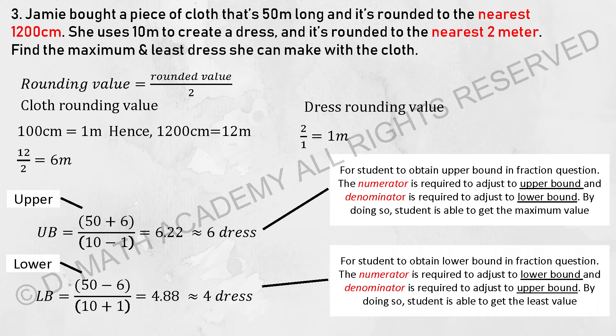Looking at the next part, both will have their own rounding values. The first one is converted to the nearest 1,200 cm and for the dress, it's nearest 2 meters. So let's say we run the calculation. We converted the 1,200 cm into meters and the rounding value of it will actually be 6 meters, and for the dress rounding value, it is 1 meter.